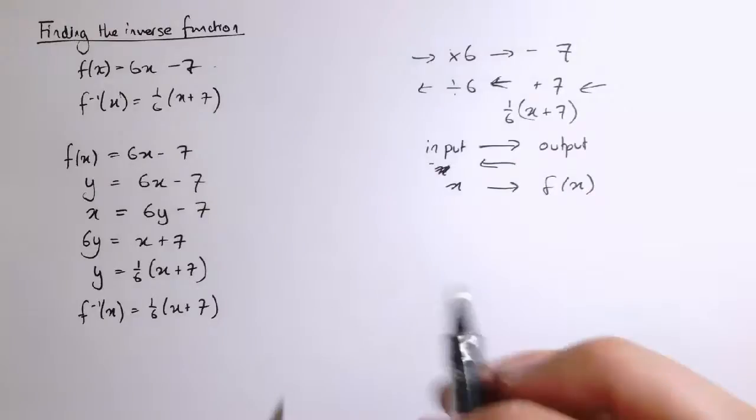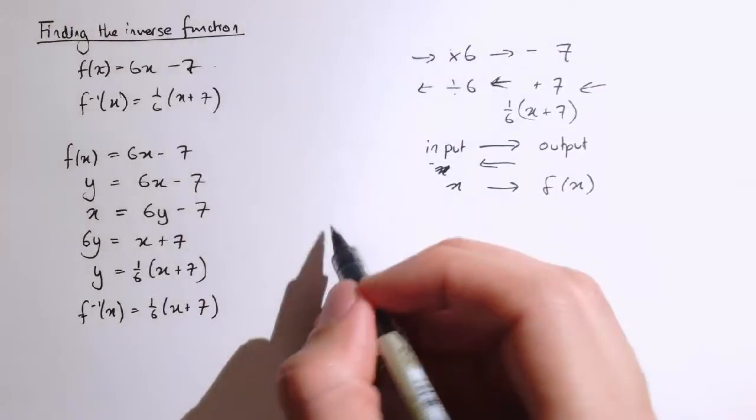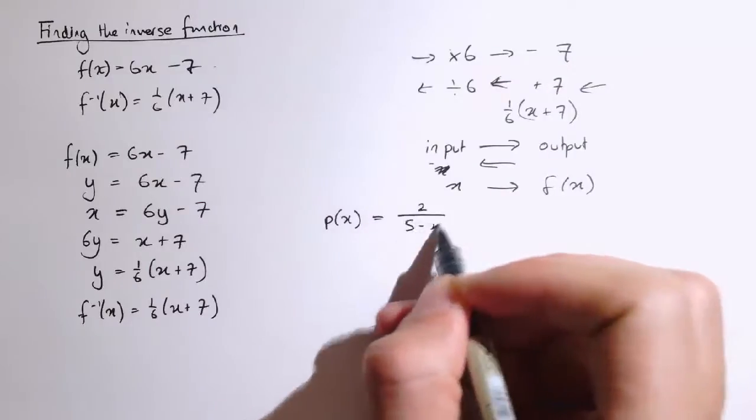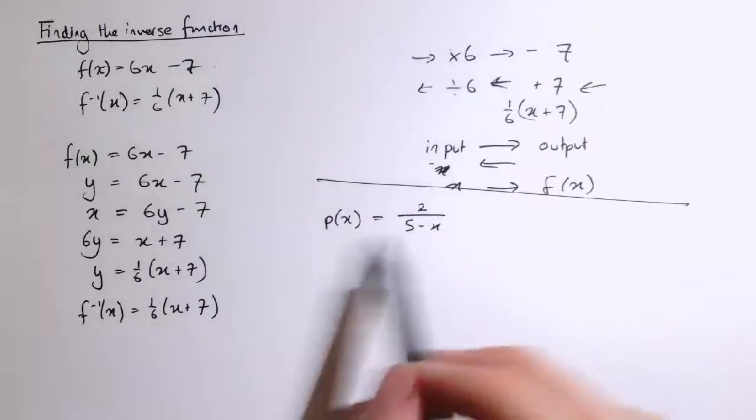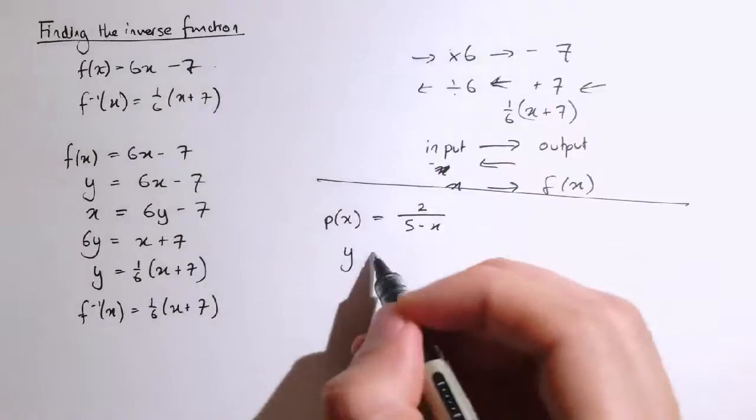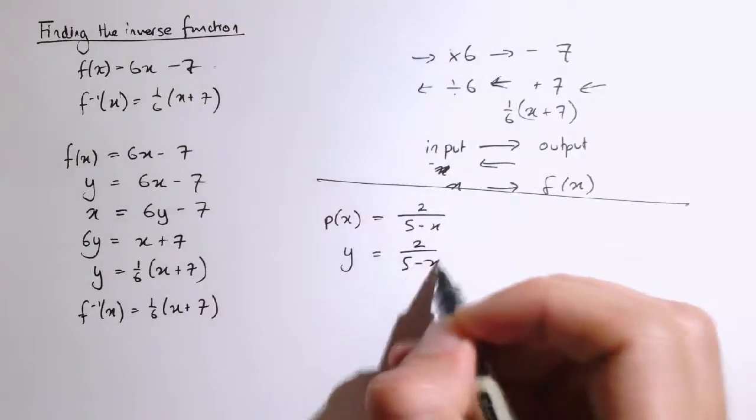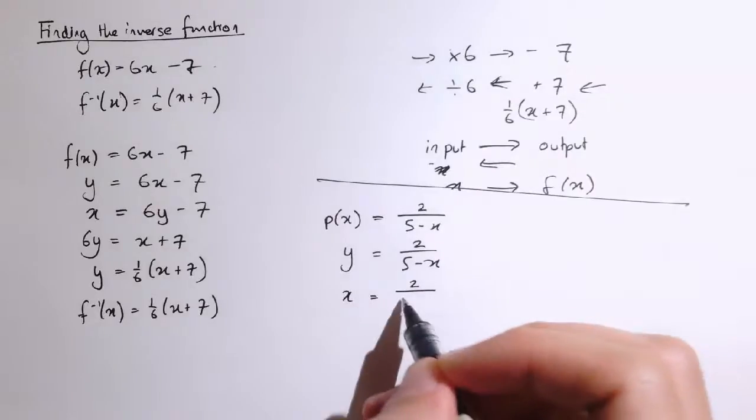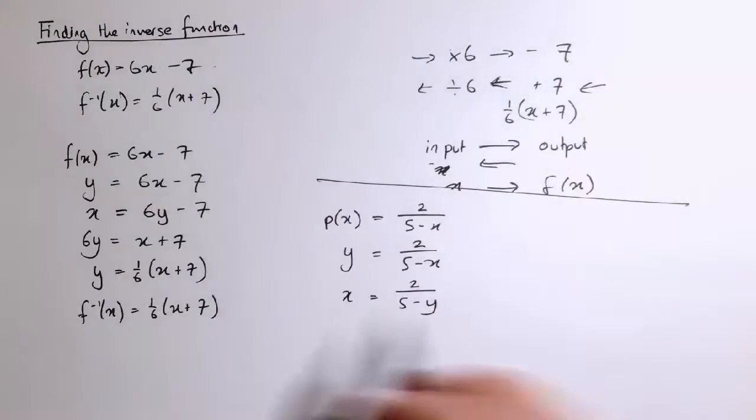Now, let's just do one more example in the same way. Let's say I had p(x) equal to 2 divided by 5 minus x. And I want to find the inverse of this one. So let's write y equals 2 divided by 5 minus x. Switch x and y and get x equals 2 divided by 5 minus y.